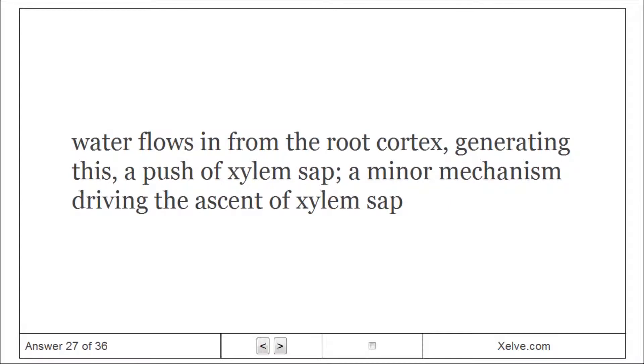Root Pressure: Water flows in from the root cortex, generating this, a push of xylem sap, a minor mechanism driving the ascent of xylem sap.